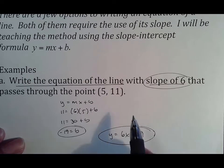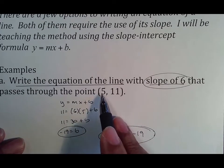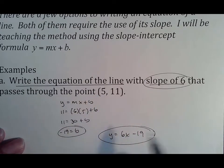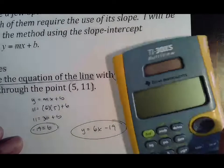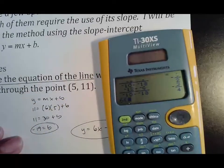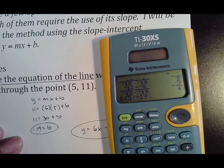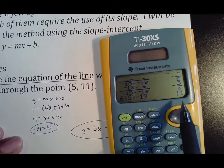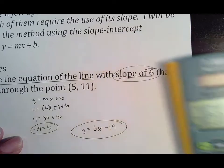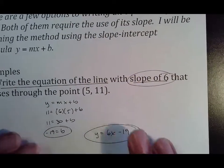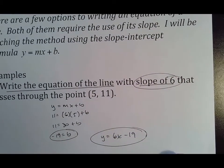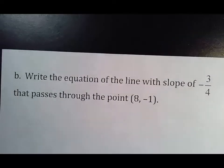To check quickly on your calculator, plug in 5 for x: 6(5) − 19 = 11. That's the answer you need, so it works. If you didn't do it right, you would not get that y-value, which means you made a mistake somewhere.